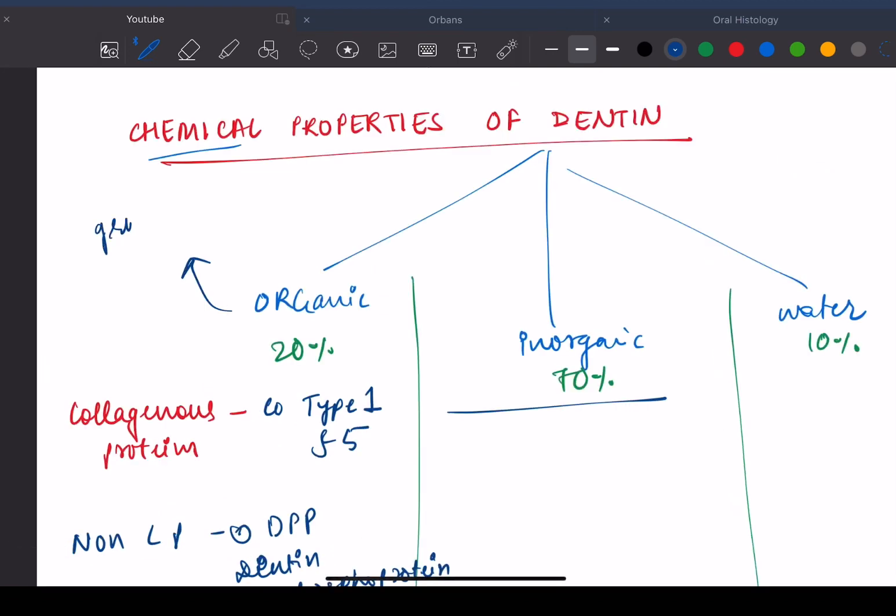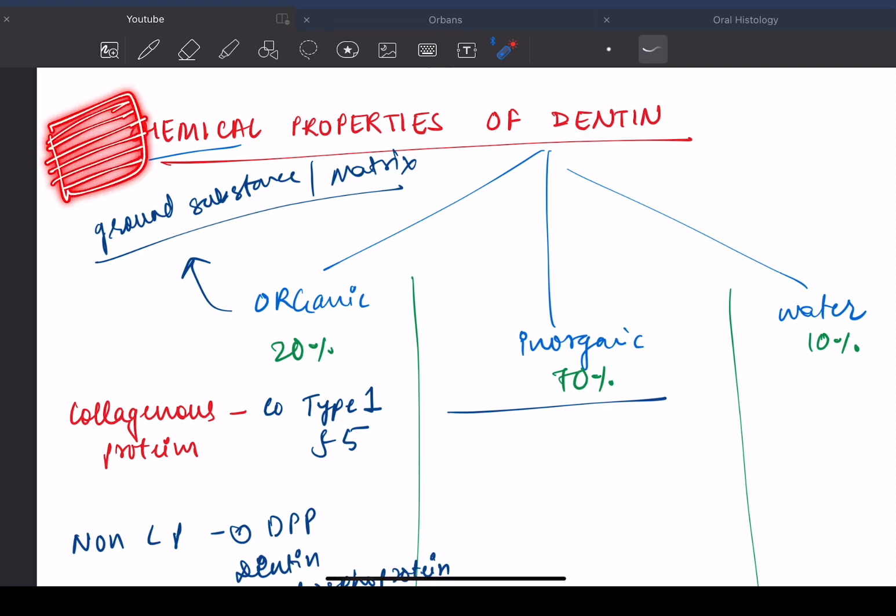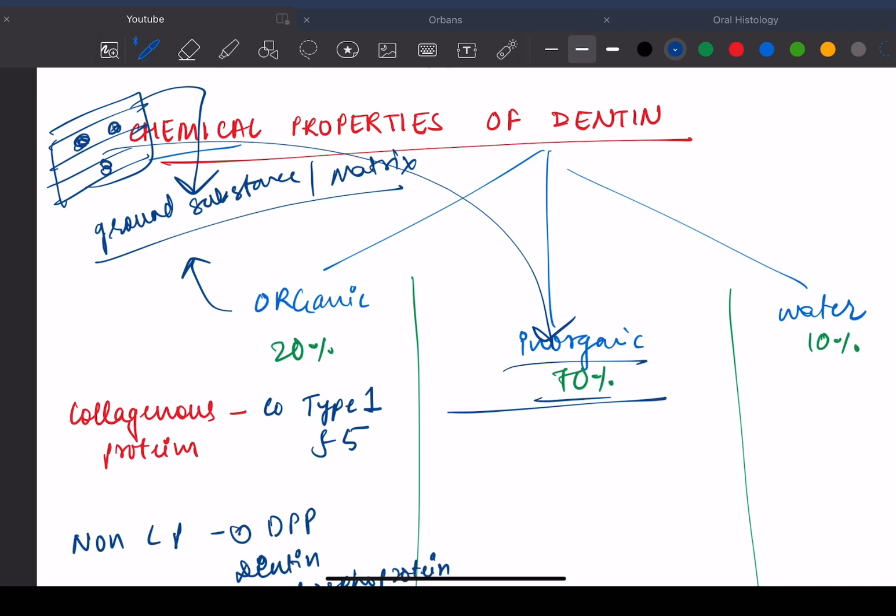We also have ground substance or the matrix. Ground substance is something that holds all the other substances. For example, the basic cement that is present in any area which holds the other particles present in that area. So the cement is the ground substance and the particles are going to be the inorganic material. For ground substance we have mucopolysaccharide which contains the proteoglycans and glycosaminoglycans.